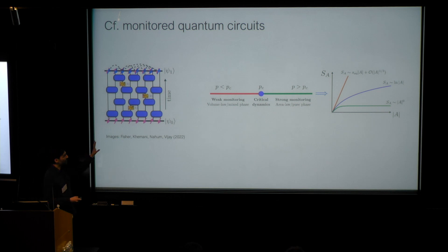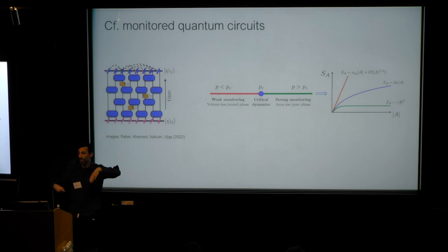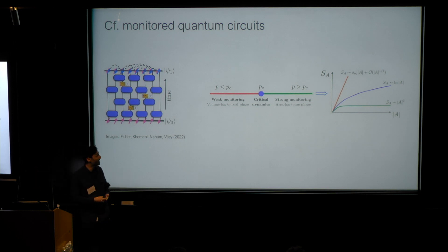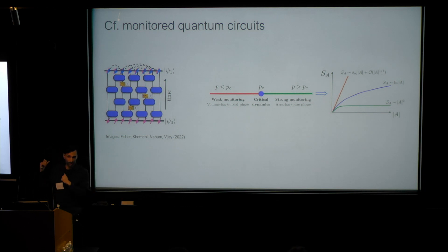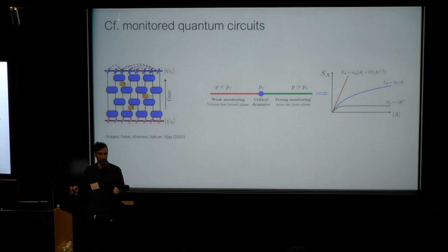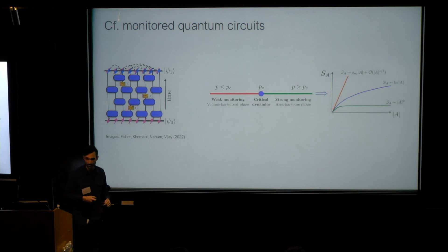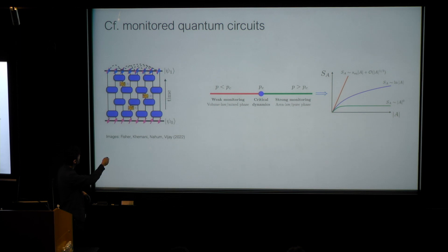There is a critical point that separates weak monitoring, in which we preserve the initial volume law, from the area law phase. These properties studied with these circuits are steady-state properties — you imagine evolving for a very long time with a steady rate of measurements, then at some long time you measure the entanglement entropy and average over many circuit realizations. In contrast, what I will be talking about is the simpler version: I have a volume law state and I just measure, varying the probability of each measurement occurring or not.